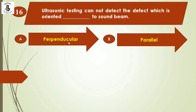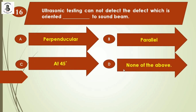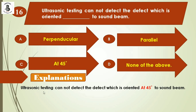Next question: Ultrasonic testing cannot detect defects oriented at which angle to the sound beam? Option A: perpendicular. Option B: parallel. Option C: 45 degrees. Option D: none of the above. Ultrasonic testing cannot detect defects which are oriented at 45 degrees to the sound beam. This is a major problem in finding defects at these angles. The right answer is option C.